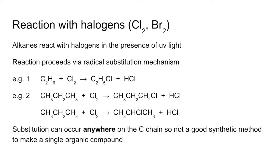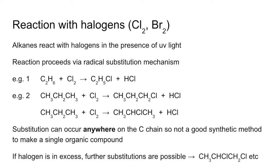Because of that, substitution can occur anywhere on the carbon chain. It's not a good synthetic method if you want to make a single organic compound. The other problem with this reaction is, if your halogen is in excess, you can get further substitutions.